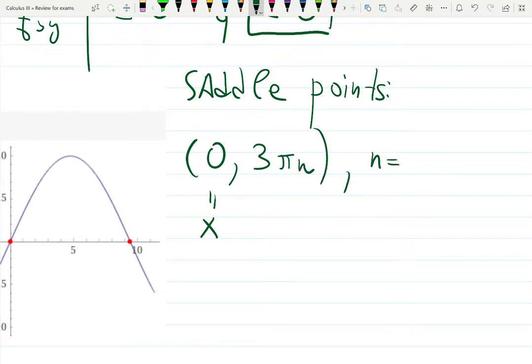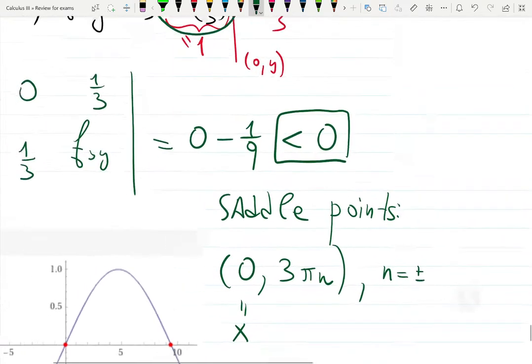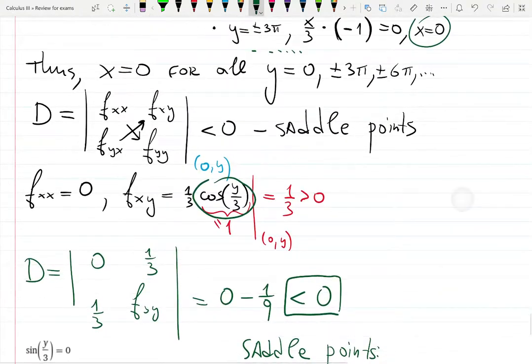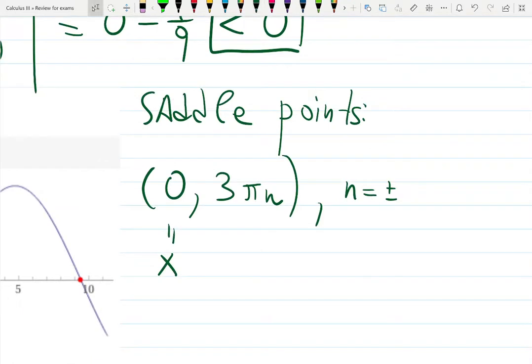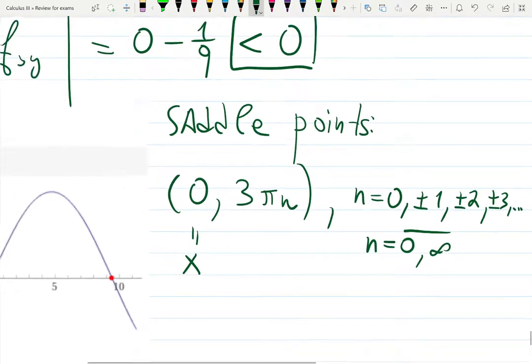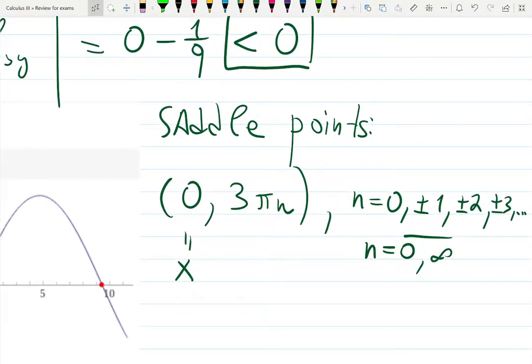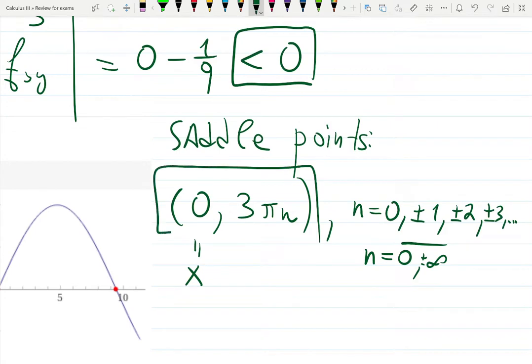y can be expressed as 3πn, when n is plus and minus. We can actually start with zero: zero, ±3π, ±6π. So n can be zero, ±1, ±2, ±3, and so on. Or sometimes people say n is from zero to infinity. Sometimes people write it with a bar at the top saying it's running from zero to infinity, but also minus infinity. Plus minus infinity. And this is my answer.